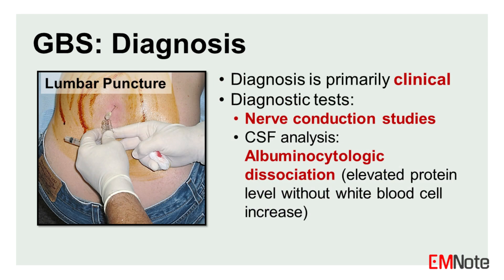Diagnosis of Guillain-Barré syndrome is primarily clinical, based on the characteristic presentation of symptoms. Supportive diagnostic tests include nerve conduction studies and cerebrospinal fluid analysis, which typically shows an elevated protein level without a corresponding increase in white blood cells — a pattern known as albuminocytologic dissociation.